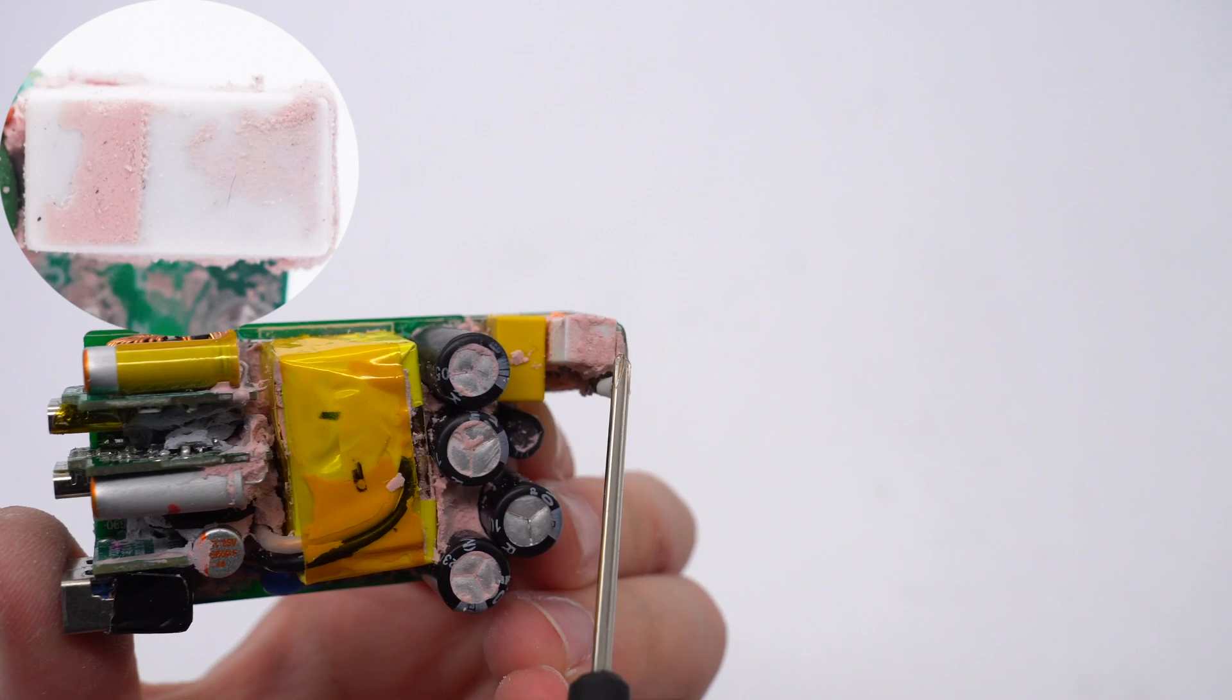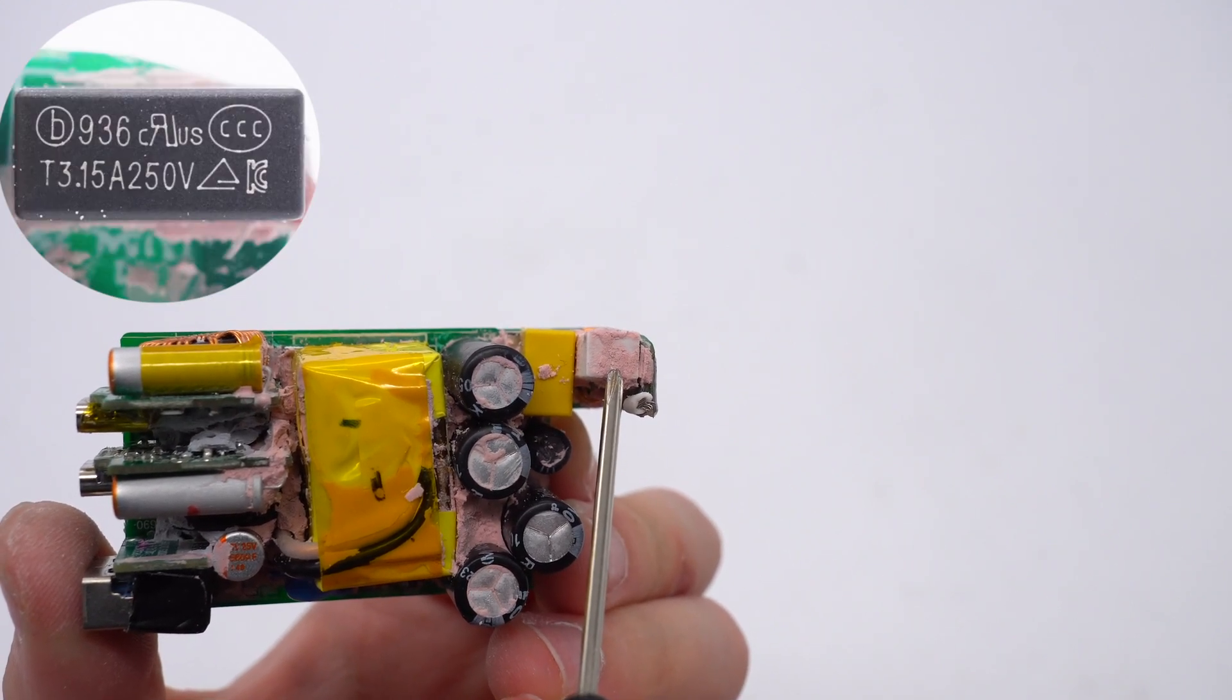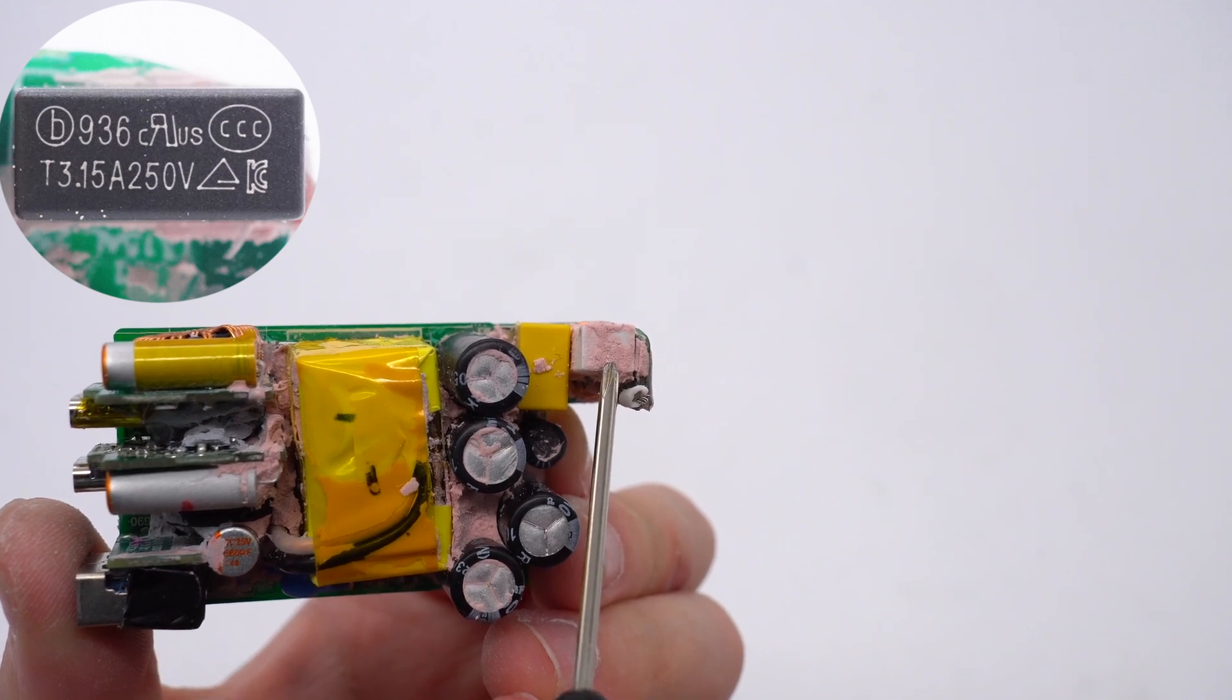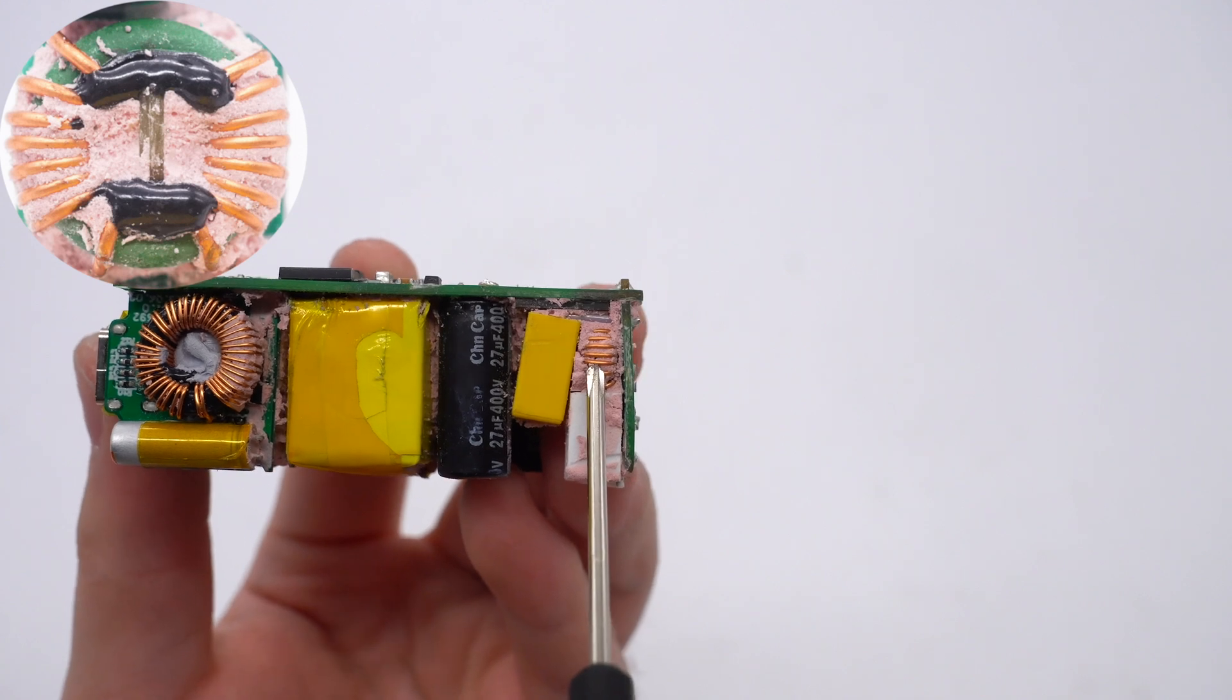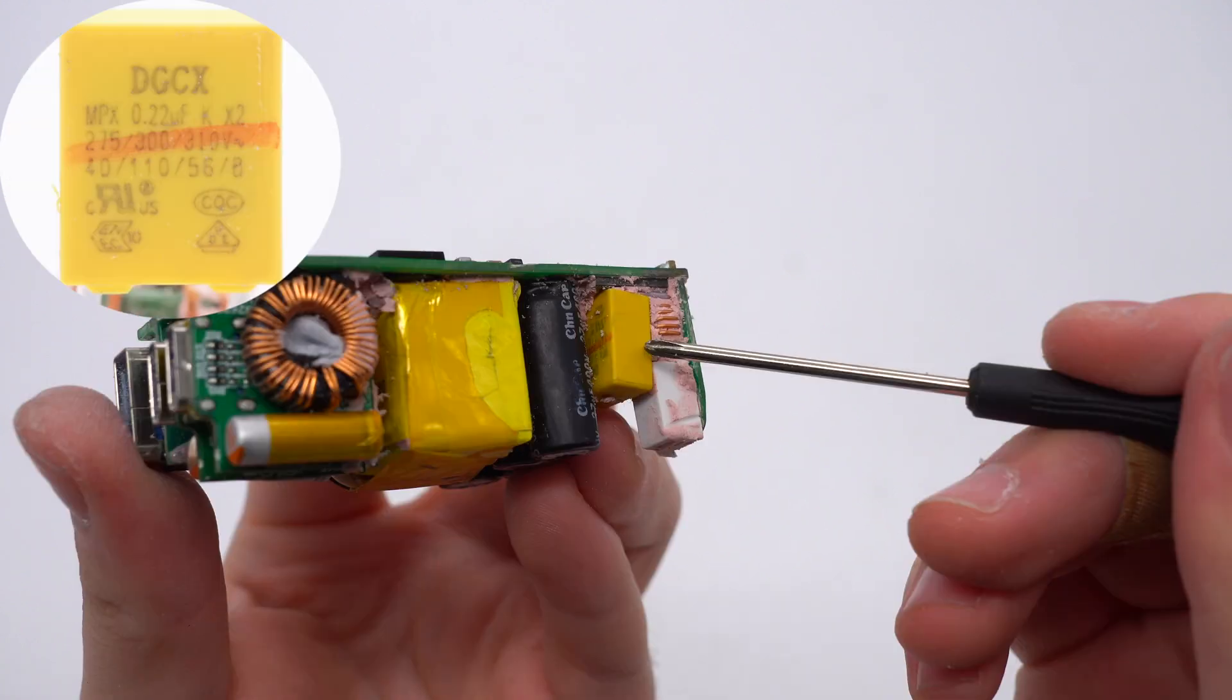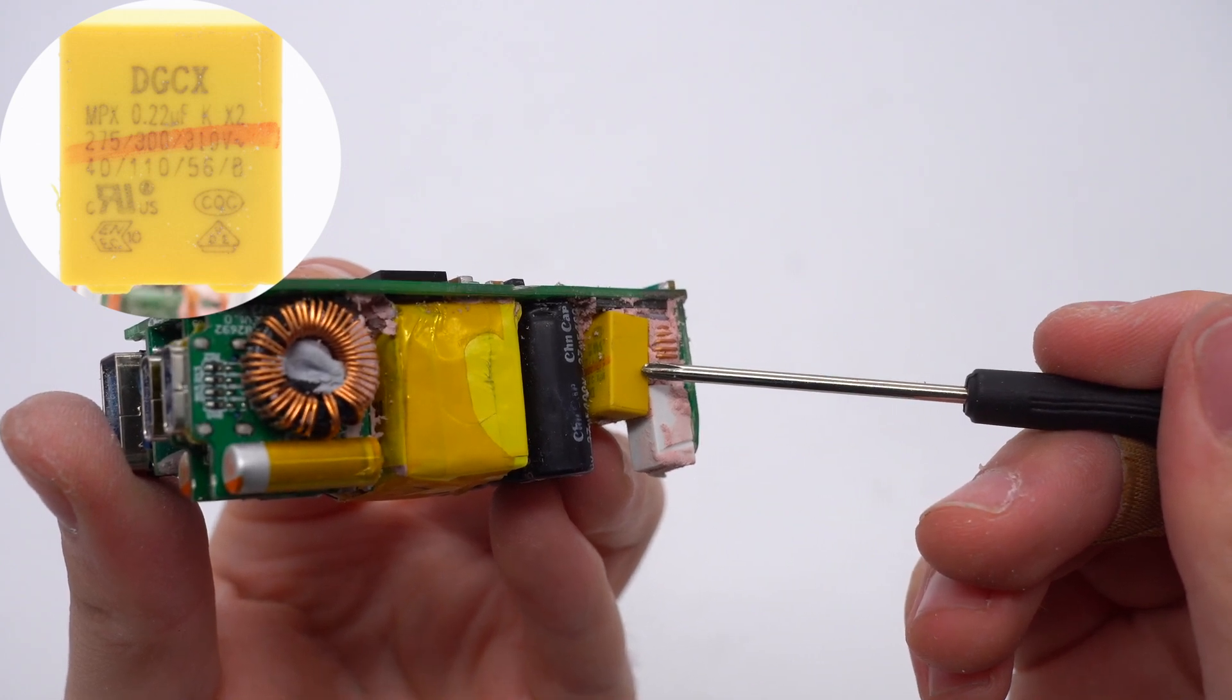The fuse is insulated by the white rubber cover. Take off the rubber cover. The fuse is from Betterfuse, 3.15A, 250V. The common mode choke is wound with magnetic and insulated wires and is also insulated with polyimide. The safety X2 capacitor is from DGCX, 0.22μF.